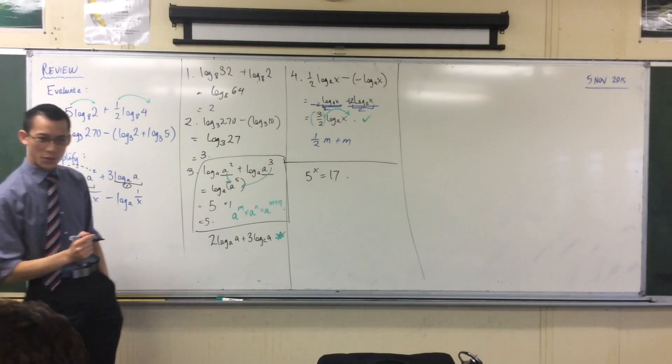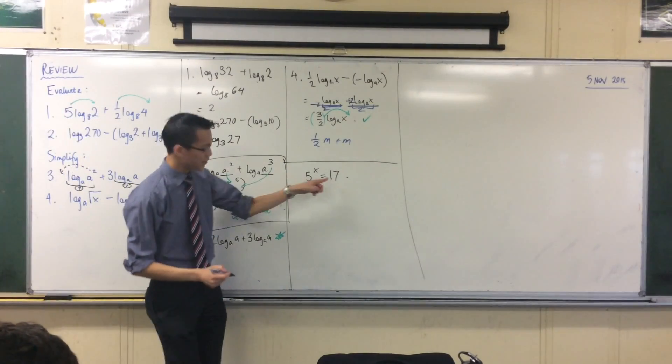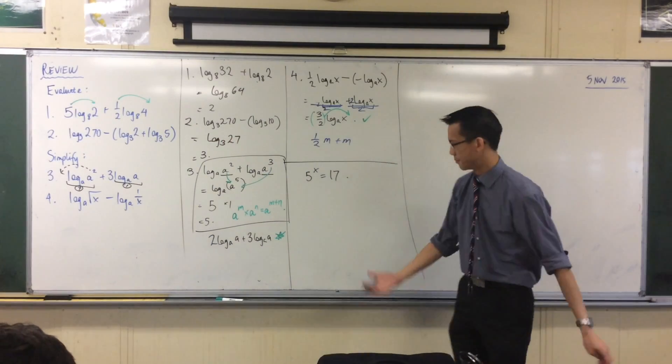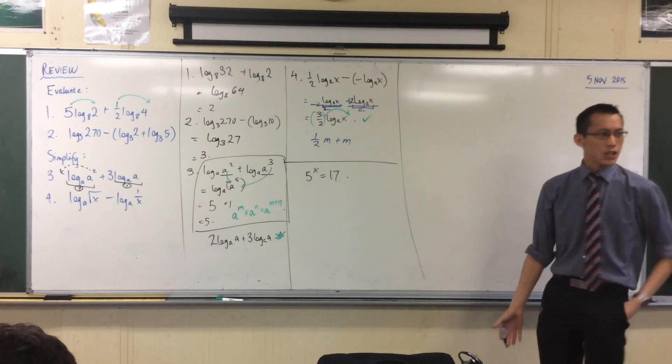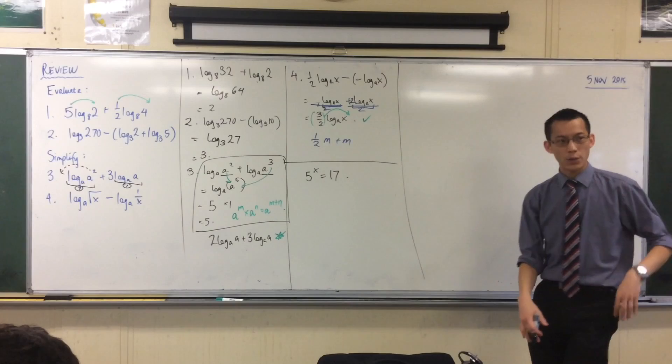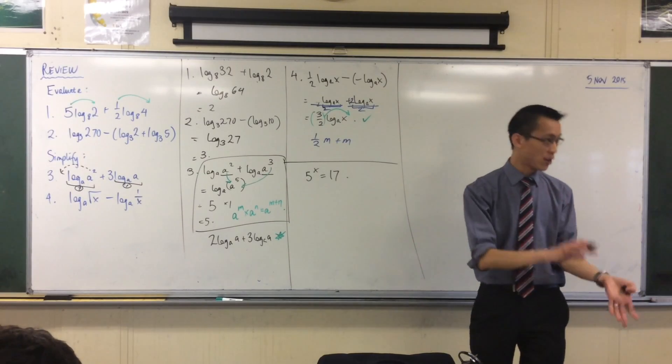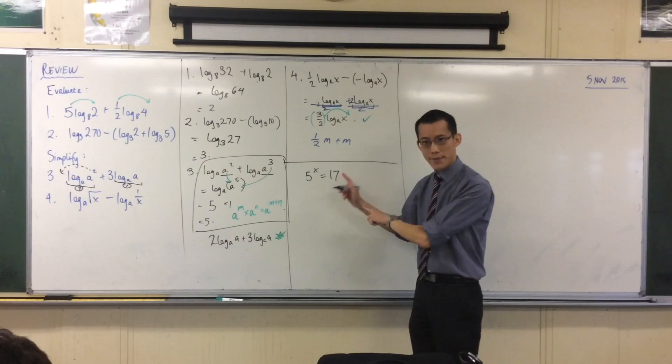What we did was, we noticed this was awkward because 17 is a jerk, right? It's not a nice power of anything, except for 17. So how can we do this?